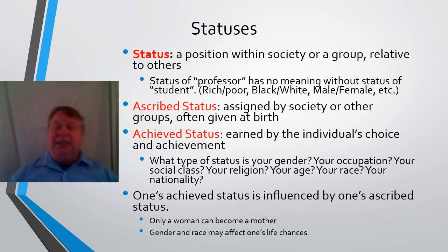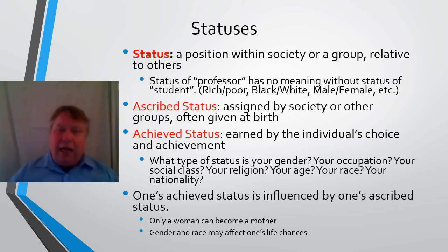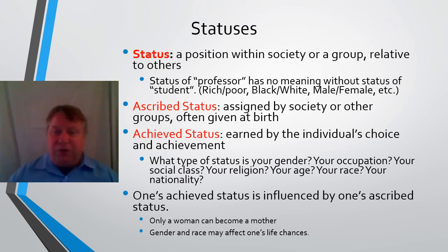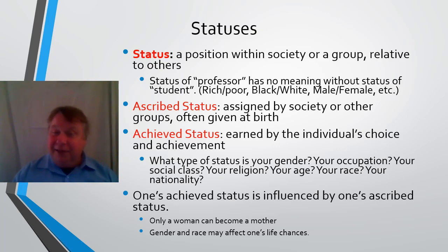Achieved status means those things that you go out and earn for yourself. Being a professor — I had to earn that, I had to achieve that. But sometimes it can be confusing. What status is your gender? Gender is not just the same as sex — gender has to do with your role expectations. Some people are heterosexual, some are homosexual. Is that a choice? Did they achieve that? We don't know entirely, but it's not entirely ascribed by society either. There's an element of individual choice there.